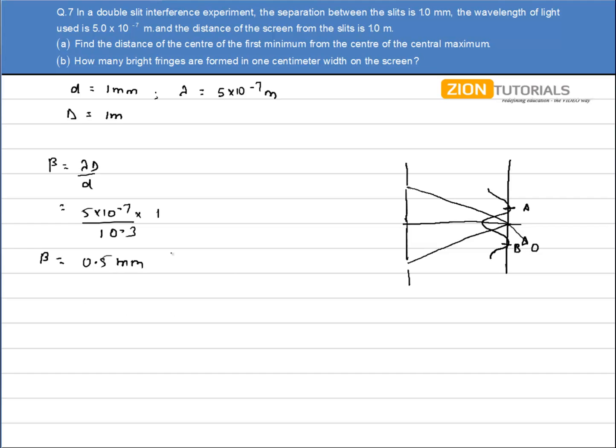And the total length AB is my fringe width. So what I have to calculate is the distance of the center of the first minima from the center of the central maxima. This is my center of the central maxima, and this is the center of the first minima.